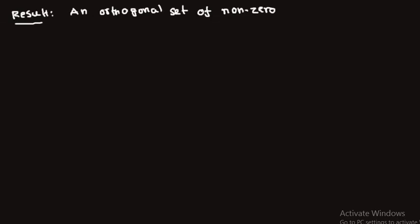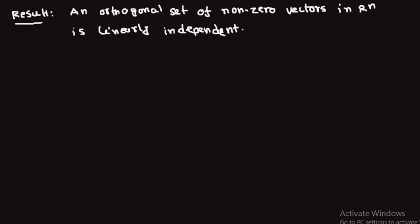So let me write that down. An orthogonal set of non-zero vectors in Rn is linearly independent. This result says that if we have any set of non-zero orthogonal vectors, that set is linearly independent.